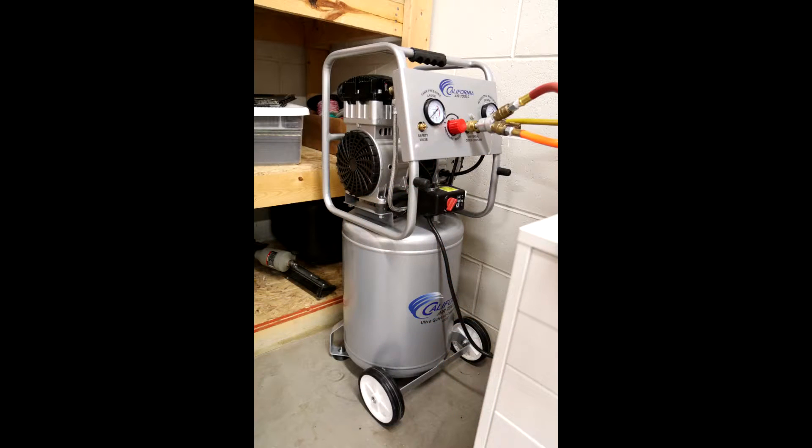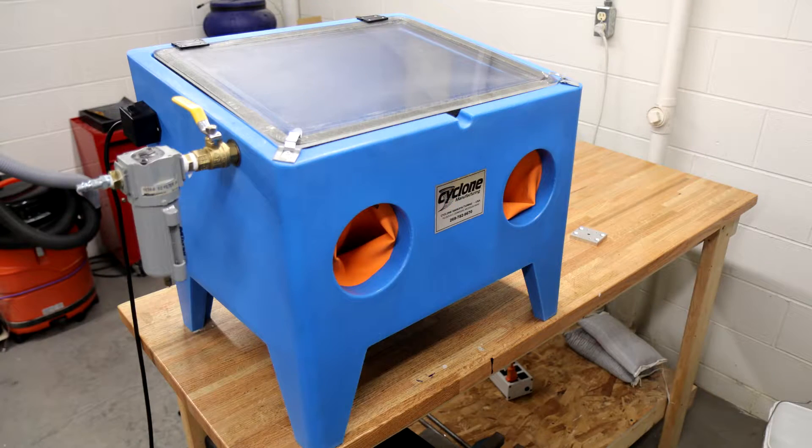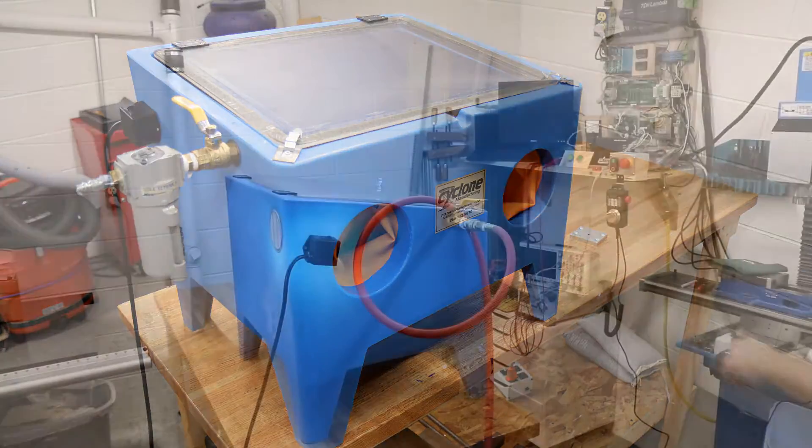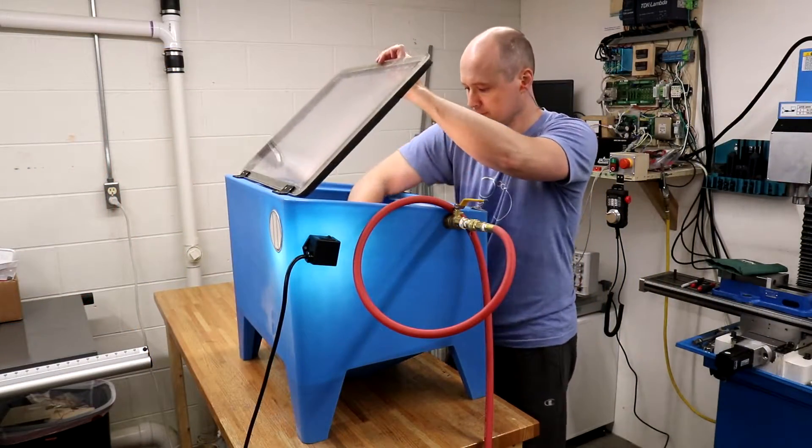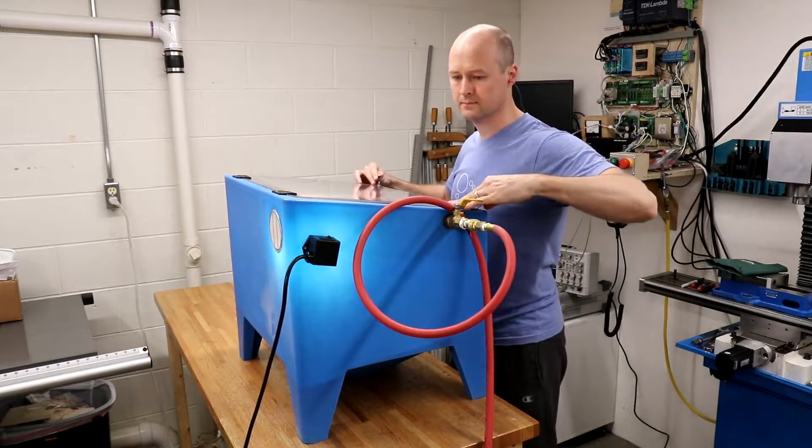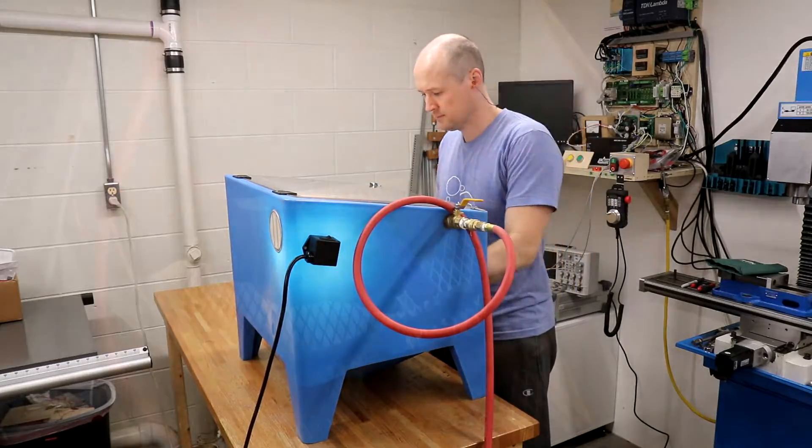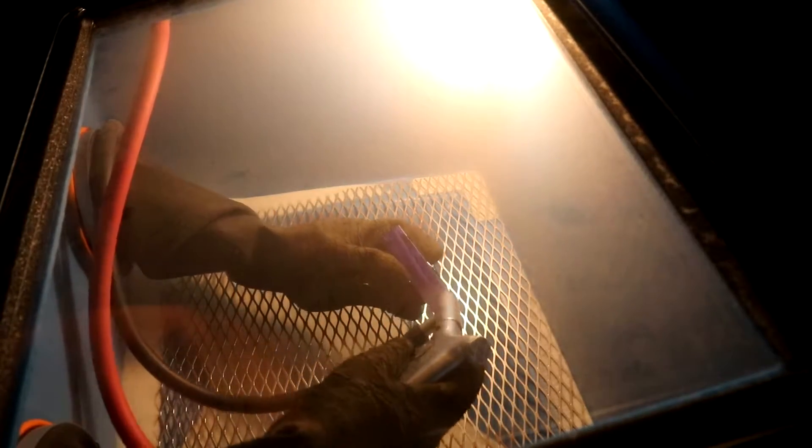Since making the review of the California Air Tools air compressor, I've had a number of people ask me about the sandblaster that I'm using. It's a single piece molded plastic benchtop unit from Cyclone Manufacturing of Michigan. This model may not be available anymore. I got this one from a seller on eBay.